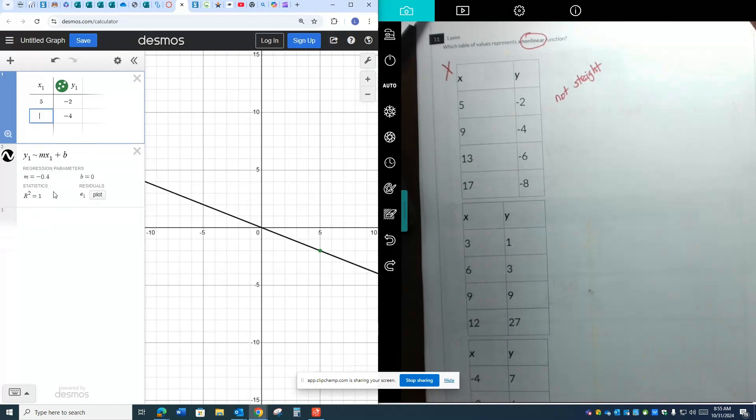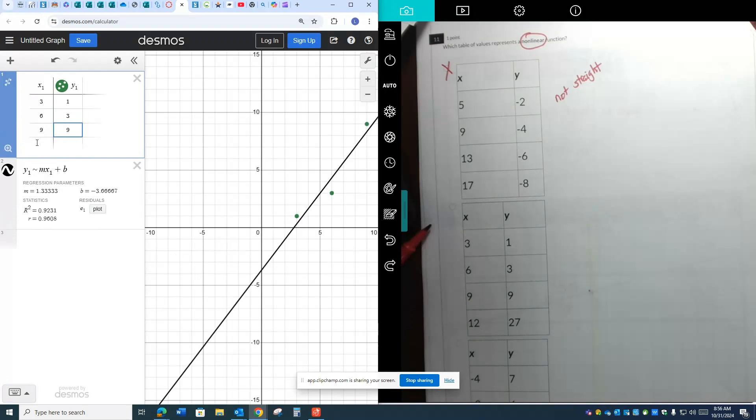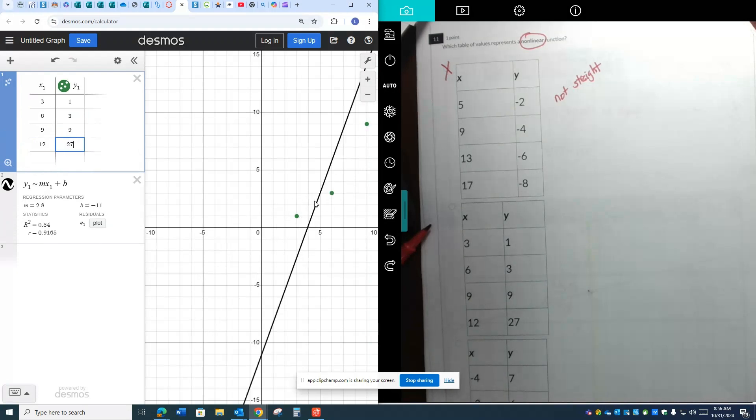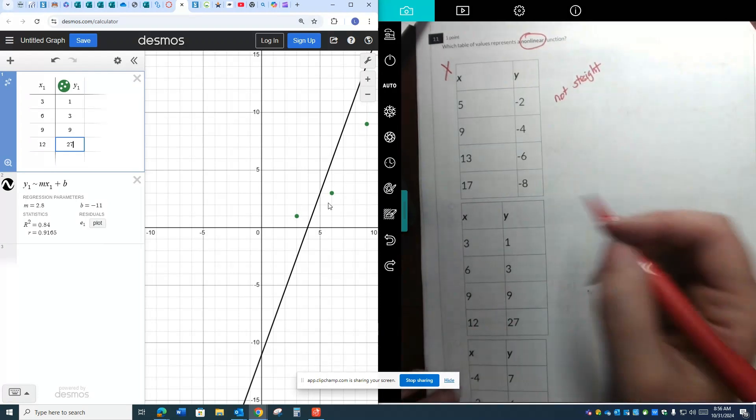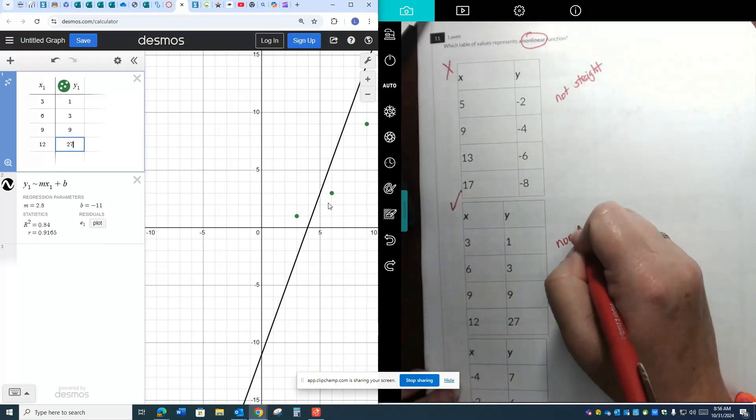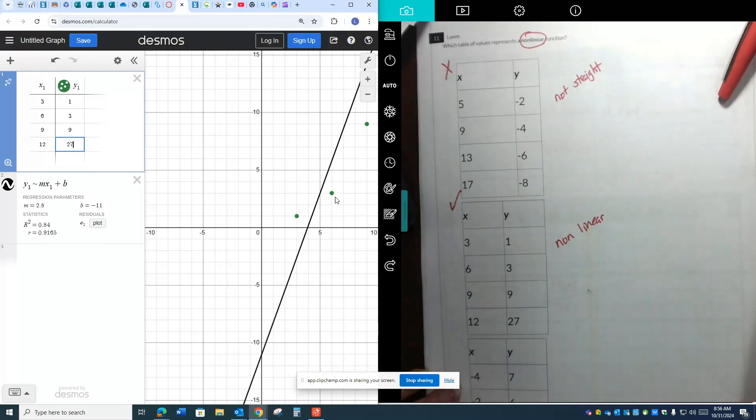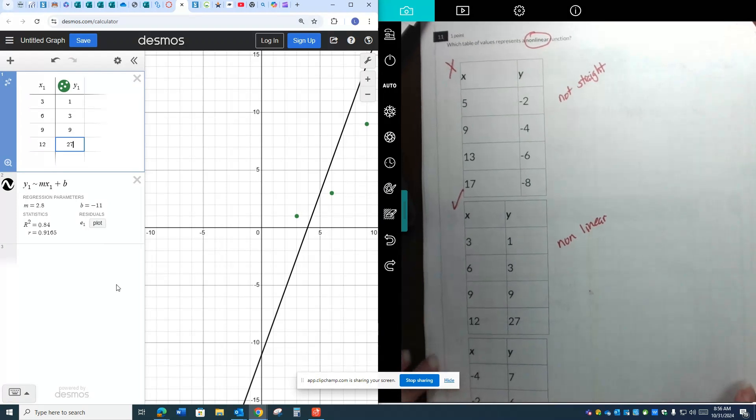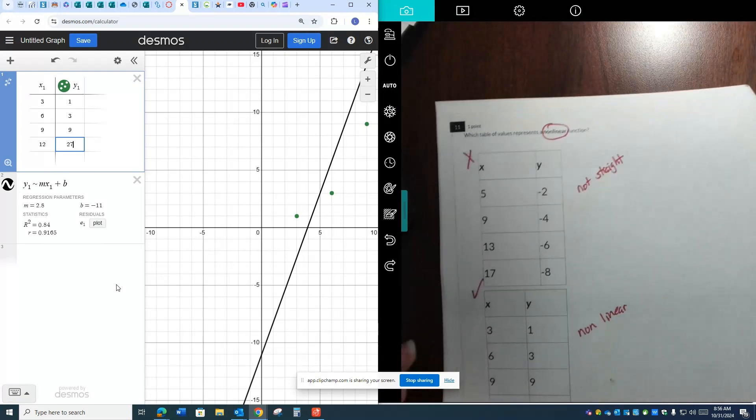Let's do 3 paired up with 1. Then let's do 6 paired up with 3. Then 9 paired up with 9. Then 12 paired up with 27. Now, what I see is I see this straight line, but do you see how the points aren't on the straight line? They couldn't draw a straight line through all of the points. So this one is nonlinear. This is the one. It's nonlinear. The points do not make a straight line. They're kind of all over the place. They couldn't find a straight line that would connect them all. All right. We don't need to check any further. That is the one that is nonlinear.